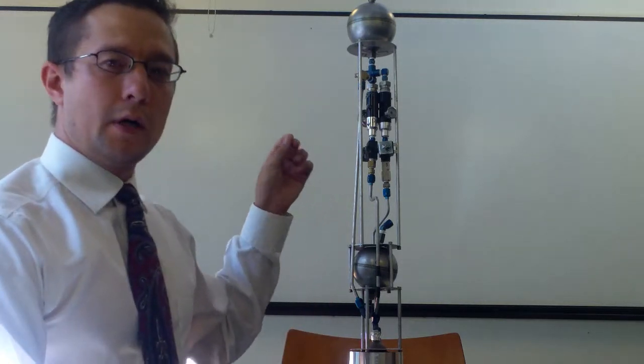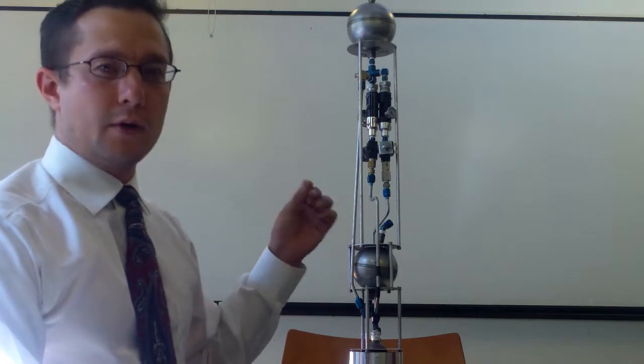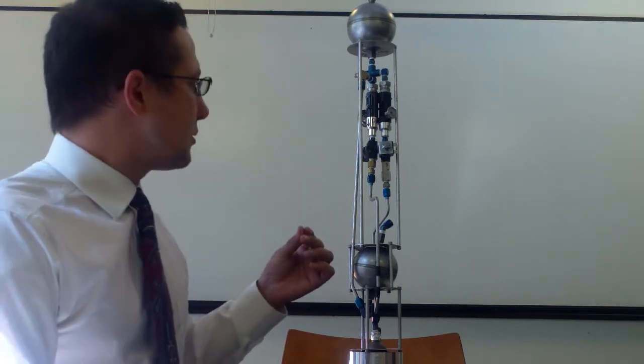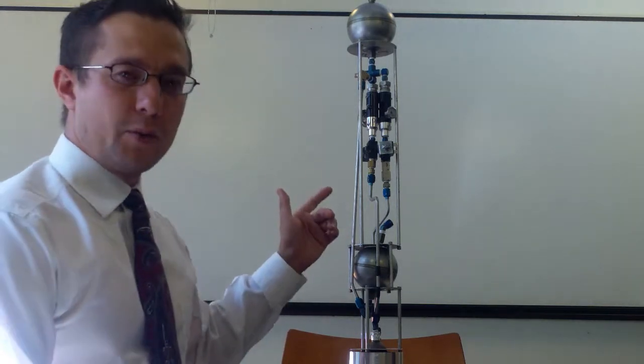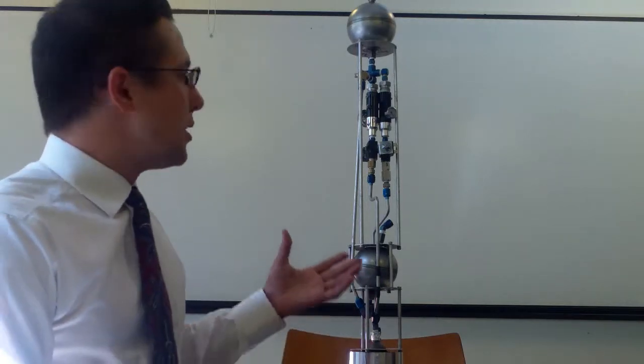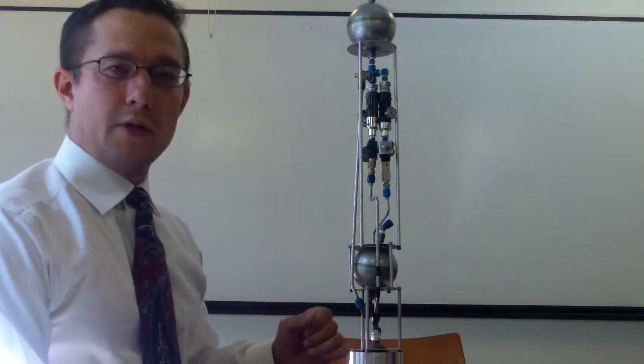Venturi orifices are limiting the mass flow so that your mixture ratio is correct, and the check valves prevent anything from the rocket engines such as flame to travel back into your tanks.